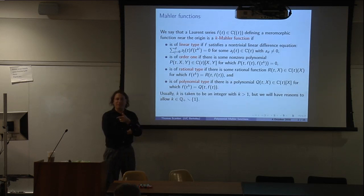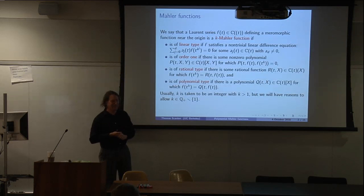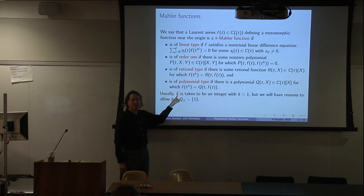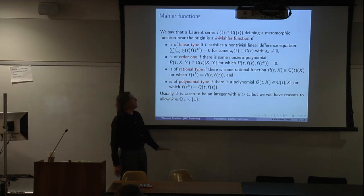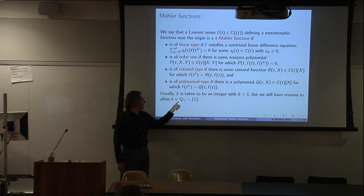Usually, when people talk about K-Mahler functions, they want K to be an integer greater than one. So I substitute T goes to T to the K. I'm going to allow it to be somewhat more general — any positive rational, as long as you don't take one. I'm not interested in equations where you don't do anything to F; I want some substitution to be going on.